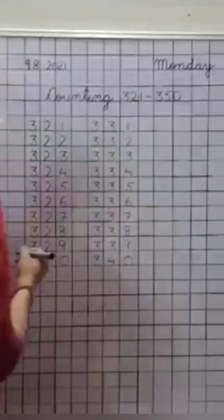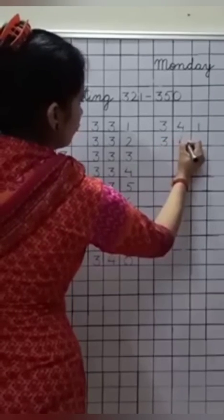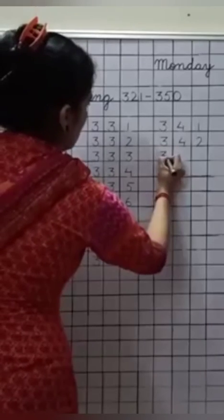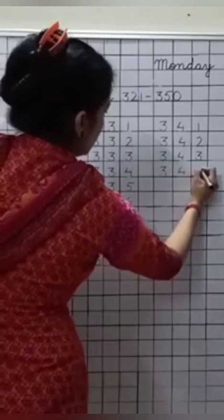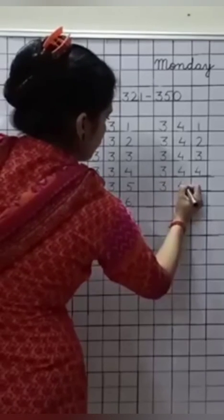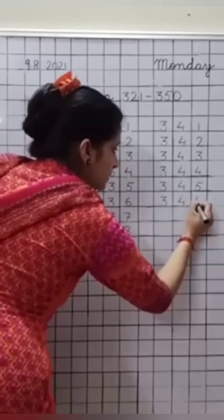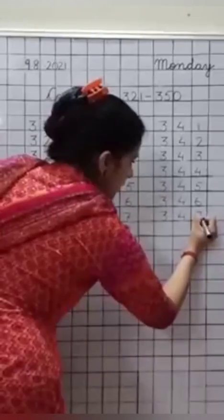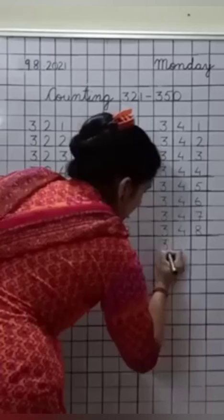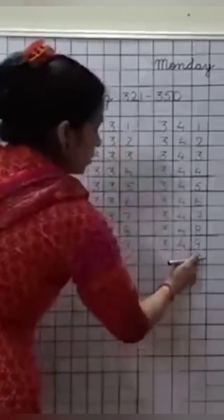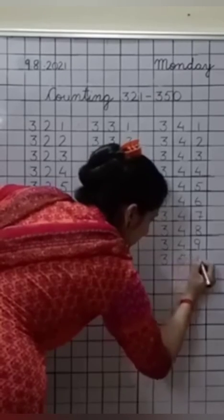Now leave this line. Write down here: three hundred forty-one, three hundred forty-two, three hundred forty-three, three hundred forty-four, three hundred forty-five, three hundred forty-six, three hundred forty-seven, three hundred forty-eight, three hundred forty-nine. What comes after forty-nine? Fifty. So write down here: three hundred fifty.